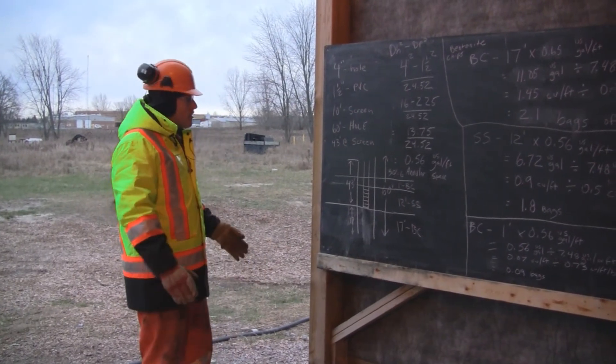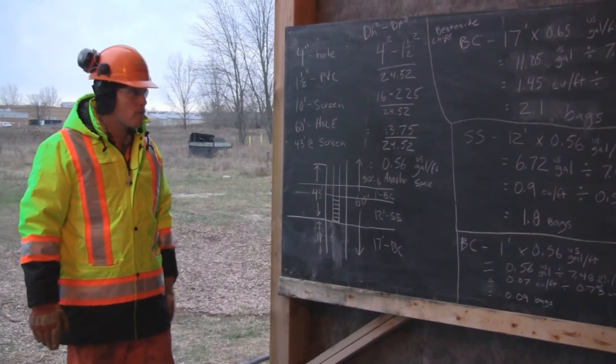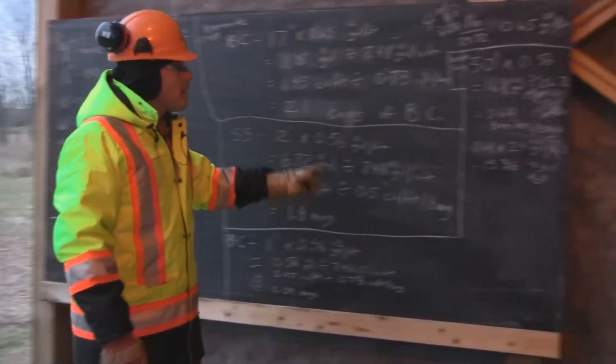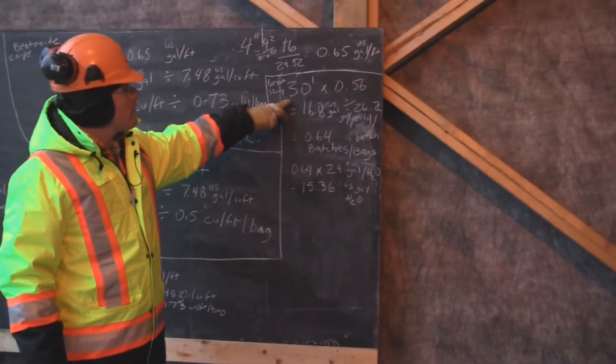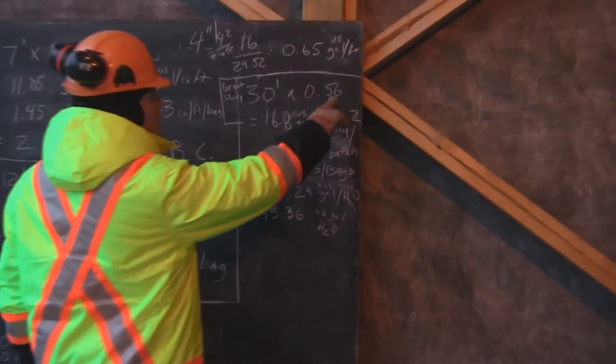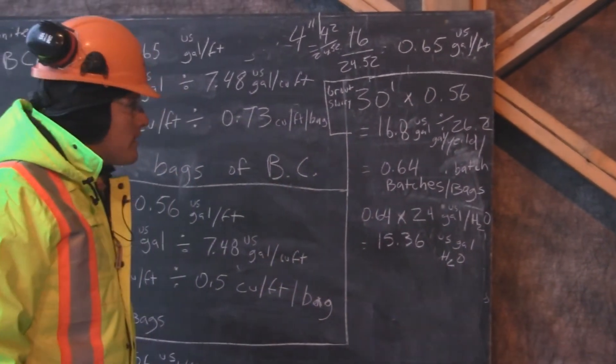The remaining 30 feet of hole has to be grouted through grouting slurry down the hole. We have 30 foot of grout slurry to do, times 0.56, which is our US gallons per foot, gives us 16.8 US gallons.